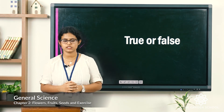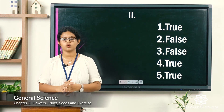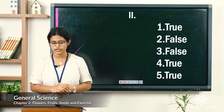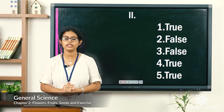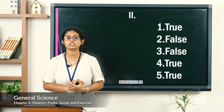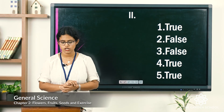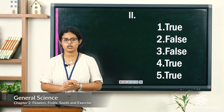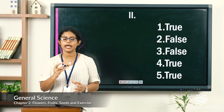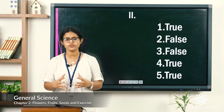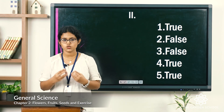Let's see the answers. First — all mango trees have the same type of leaves: true. Second — leaf veins are found only on large leaves: false, because all leaves have leaf veins, which carry food and water. Third — all plants have the same kind of roots: false, some plants have taproot and some have fibrous root. Fourth — air enters a plant through its stomata: true, the tiny pores on the leaf called stomata allow air to enter. Fifth — a seed has a baby plant in it: true, the seed has a baby plant which grows into a new plant.